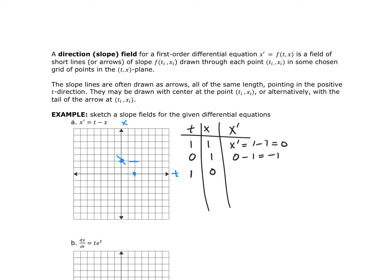At the point (1, 0), X prime equals 1 minus 0, which is 1. I continue filling out the chart. For (2, 2), I get 0. Notice that everywhere T and X are equal, I get a slope of 0—a horizontal line. This holds at (3,3), (0,0), (-1,-1), (-2,-2), and (-3,-3).